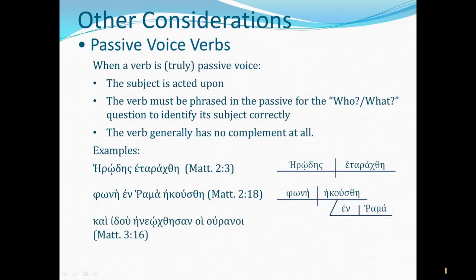One more: Matthew 3:16 — And behold, eneochthesan. You might see theta-eta-sigma and think future passive, but that sigma belongs to the ending -san; we just have theta-eta for the aorist passive, and the augment on the front where alpha has been lengthened to eta — so this is from anoigo. And behold, the heavens were opened. Who or what was opened? The heavens were opened. The introductory conjunction kai and the interjection idou are diagrammed accordingly — a further point of review from our part four video. We are finished with part five. Happy diagramming!